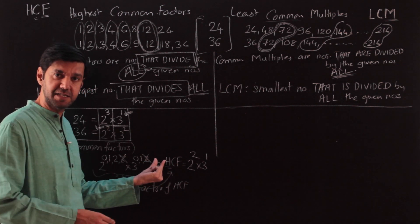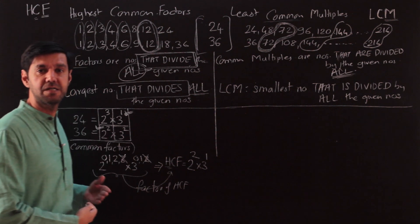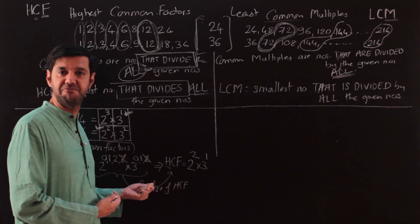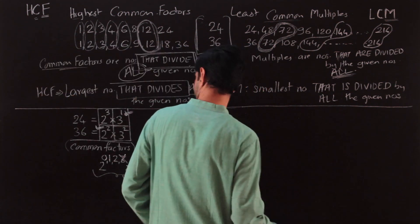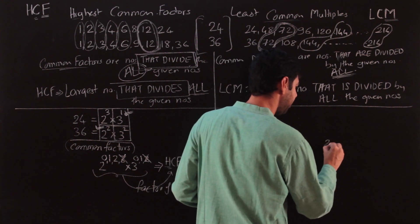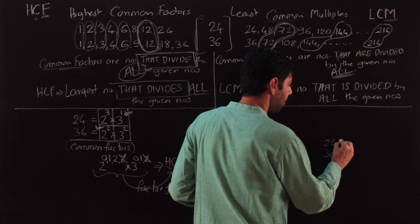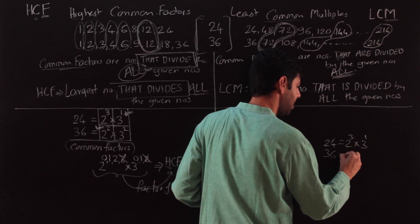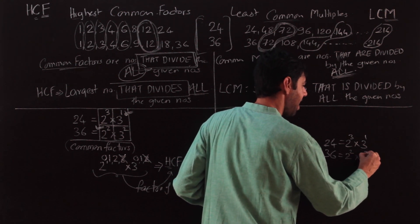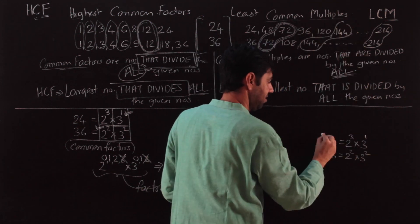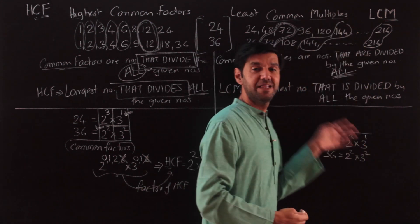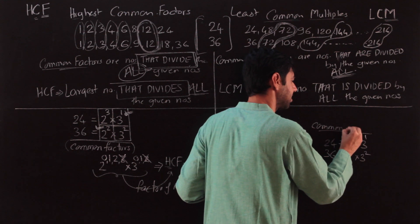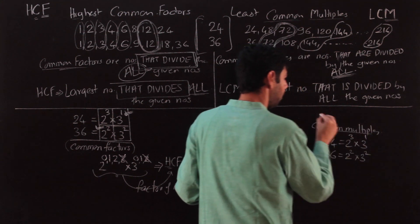Now let's move to LCM. We have 24 = 2³ × 3¹ and 36 = 2² × 3². This time I am interested in multiples — these numbers will divide the multiple, so the numbers appear in the numerator. I want common multiples.